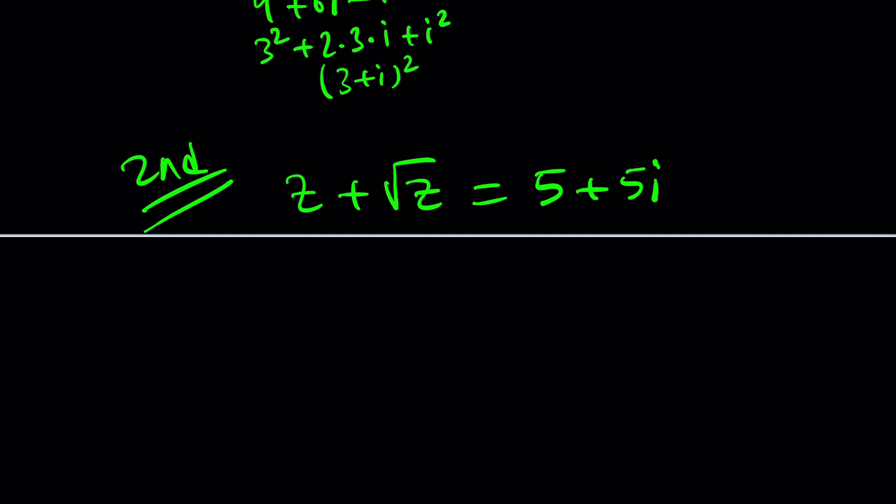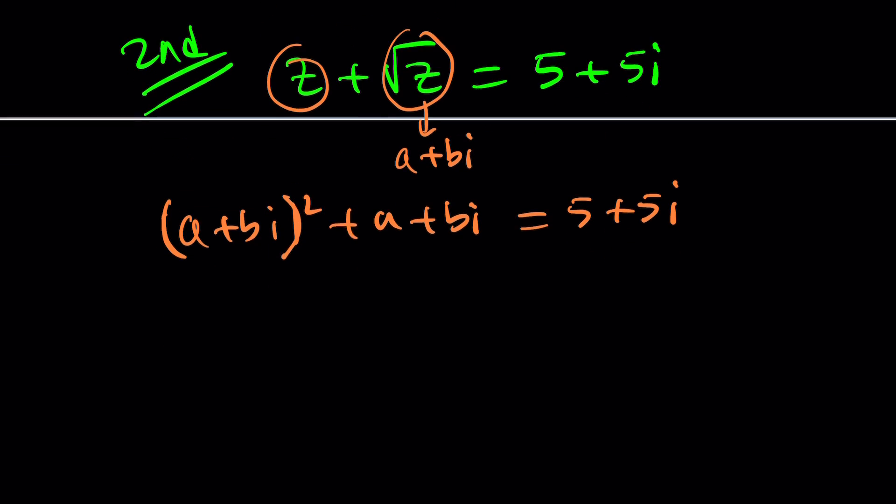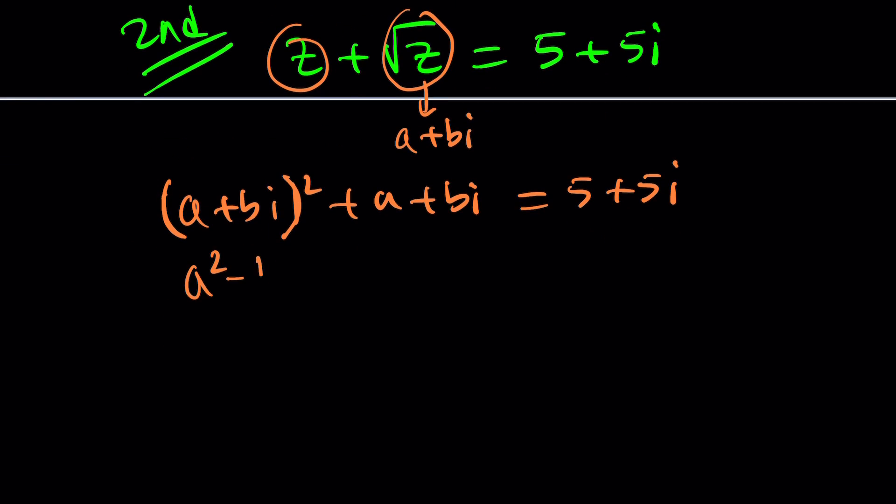So this is my equation. And now, instead of just trying to get rid of the radical, why not set z equal to a plus bi directly? Then the square root of z will be a plus bi, and z will be a plus bi quantity squared. It's going to look like this: a plus bi quantity squared plus a plus bi equals 5 plus 5i. And then we can expand it, bring the real parts together.